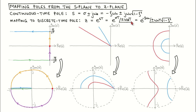We start with sigma and omega_d both zero, which is the origin of the s-plane. This corresponds to a pole that is marginally stable with a natural frequency of zero, and it is mapped to one on the z-plane. If we now move up the imaginary axis, the pole remains marginally stable but the natural frequency increases. In the z-plane, the magnitude remains one but the angle increases, which means we move along the edge of the unit circle.